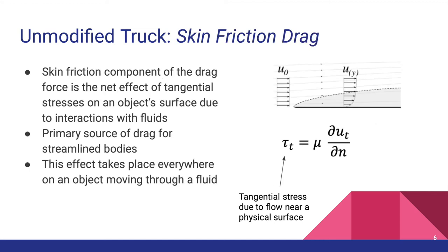Skin friction drag is the result of tangential viscous stresses caused by an object's interaction with a fluid boundary layer, and a boundary layer is just the region near an object where velocity is changing as you move away from it. This effect takes place on all surfaces of an object moving through a fluid. This can be mitigated with design improvements and decreases with the thickness of the boundary layer, as shown in the stress equation. However, the effects of skin friction drag are always present to some degree.